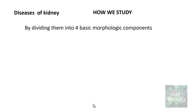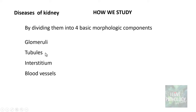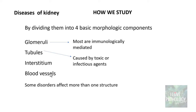Now how do we study the diseases of kidney? Basically by dividing them into 4 basic morphologic components. We look into the diseases of glomeruli, tubules, interstitium, and blood vessels. Each of these is unique in the way they present and are affected. For example, glomerular diseases are most often immunologically mediated, whereas diseases of tubules are most often caused by toxic or infectious agents.